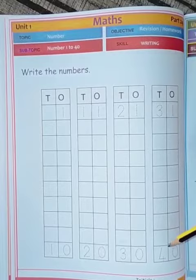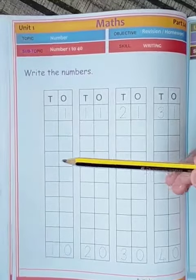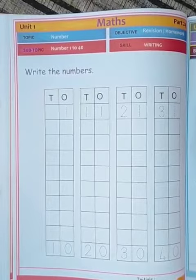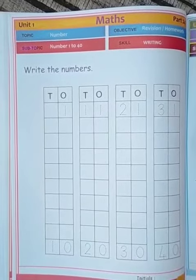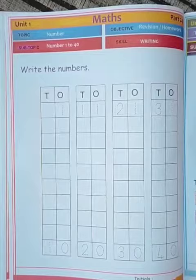31 to 40 in this column, and say these numbers loudly while writing. In this way, we finished our topic: Numbers 1 to 40.